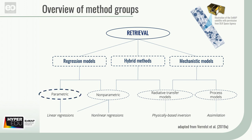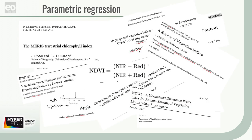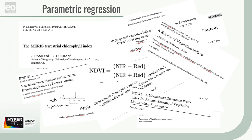We'll start with parametric regression. A plethora of parametric regressions in the form of vegetation indices have been published in the context of optical remote sensing. They differ according to their mathematical formulation and number of spectral bands used. Hence, categorization into six main methods can be made: narrow band vegetation indices using discrete selected bands to formulate simple ratios or normalized differences — a famous example is the Normalized Difference Vegetation Index, or NDVI; spectral positions such as Red Edge Inflection Point, or REIP for short; spectral derivates; spectral integrals; parameterizations of the continuum removal; and wavelet transformation. There is an index database containing a huge number of indices for a variety of sensors and applications — you can find the link in the resources section.